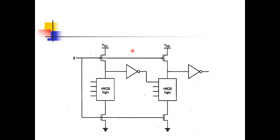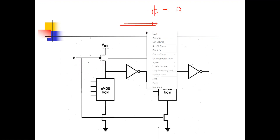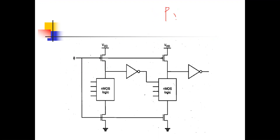To understand how that cascading problem was removed, we first need to understand what the problem was. Remember the two concepts from the previous lecture: when phi equals 0 and when phi equals 1. Phi equals 0 is called the pre-charge phase, and phi equals 1 is called the evaluate phase. In pre-charge, the output is charged up to VDD.